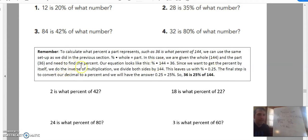And the part, 36, and need to find the percent. Our equation looks like this: percent times 144 equals 36, which we want to get the percent by itself. We do the inverse operation. We divide both sides by 144.